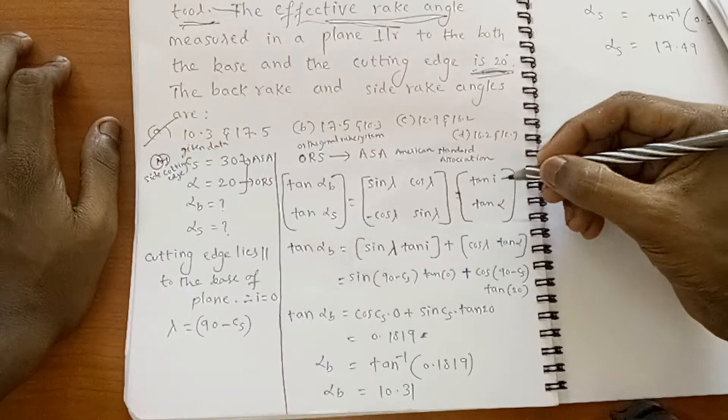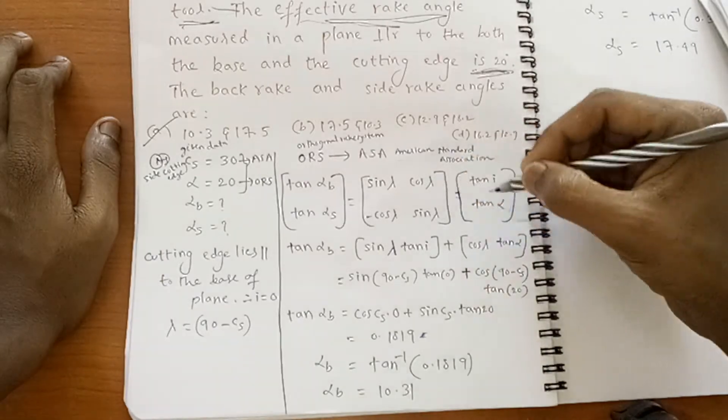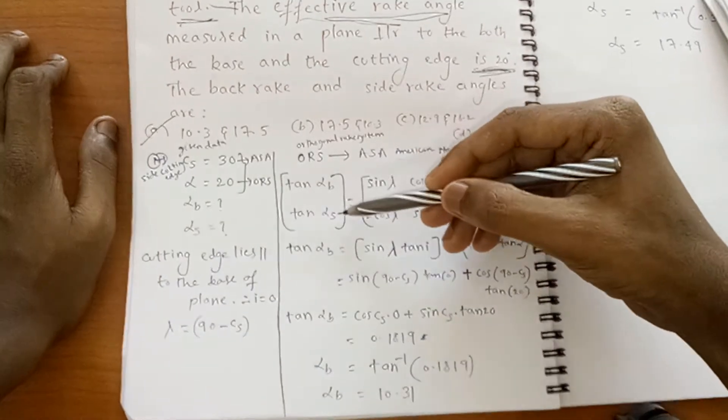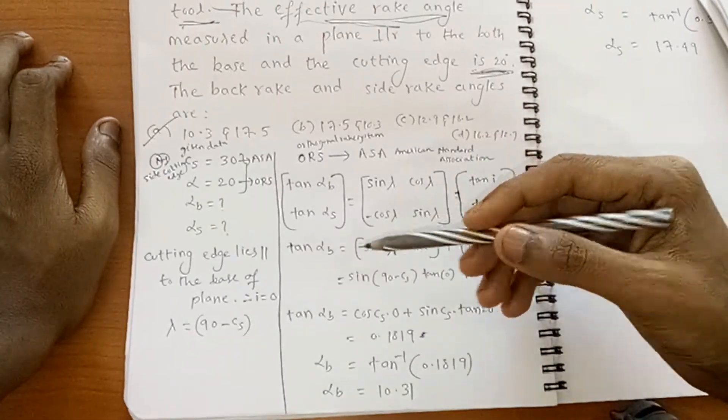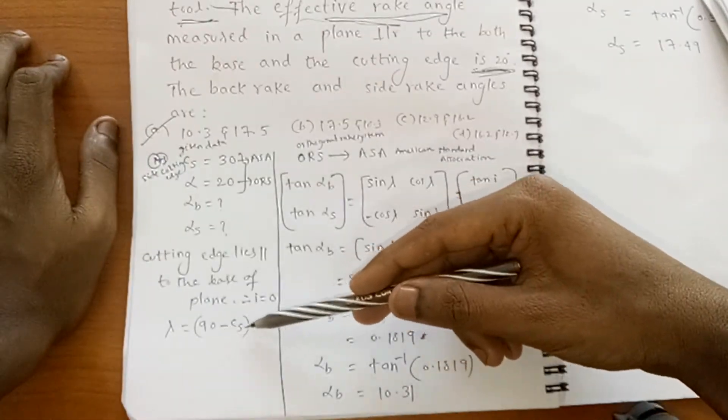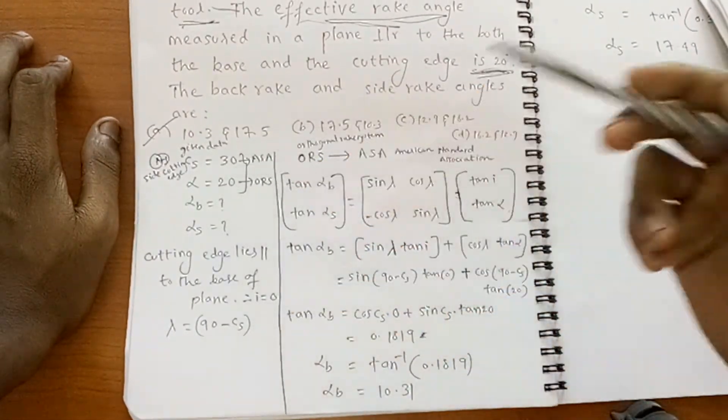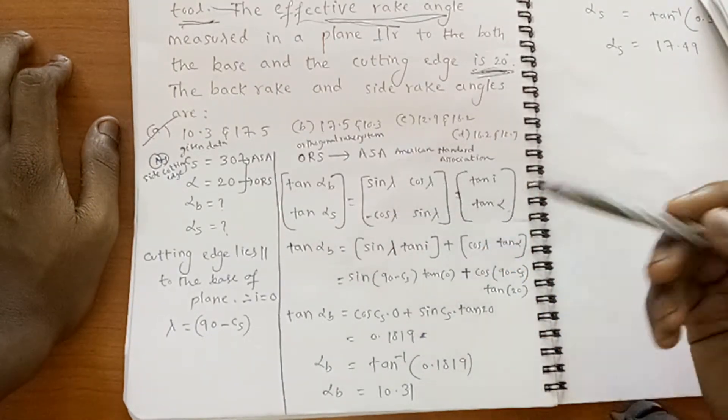So three angles are given, you can easily find out alpha_B, alpha_S. Lambda directly in the question not given, but you know lambda equal to 90 minus CS. CS is given. This is simple mathematics, multiplication.